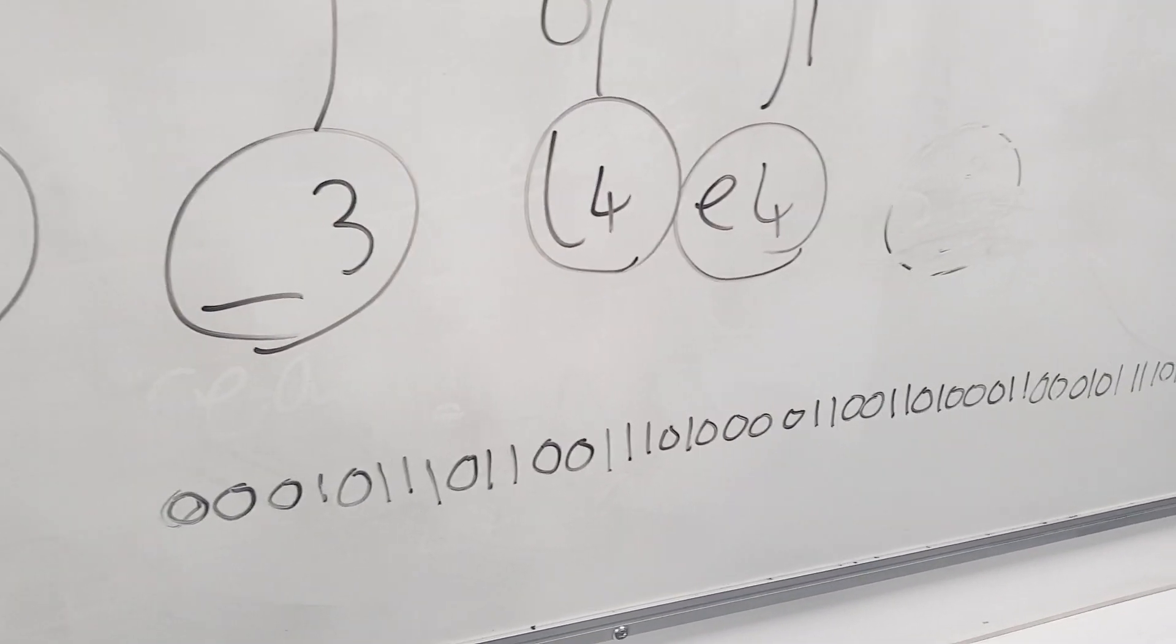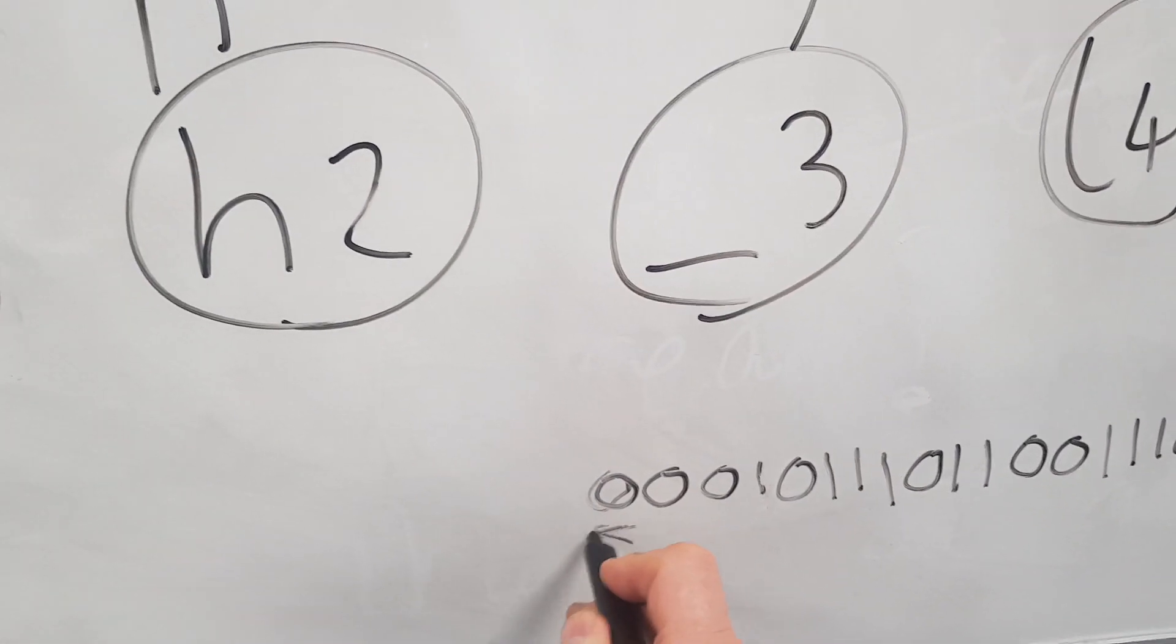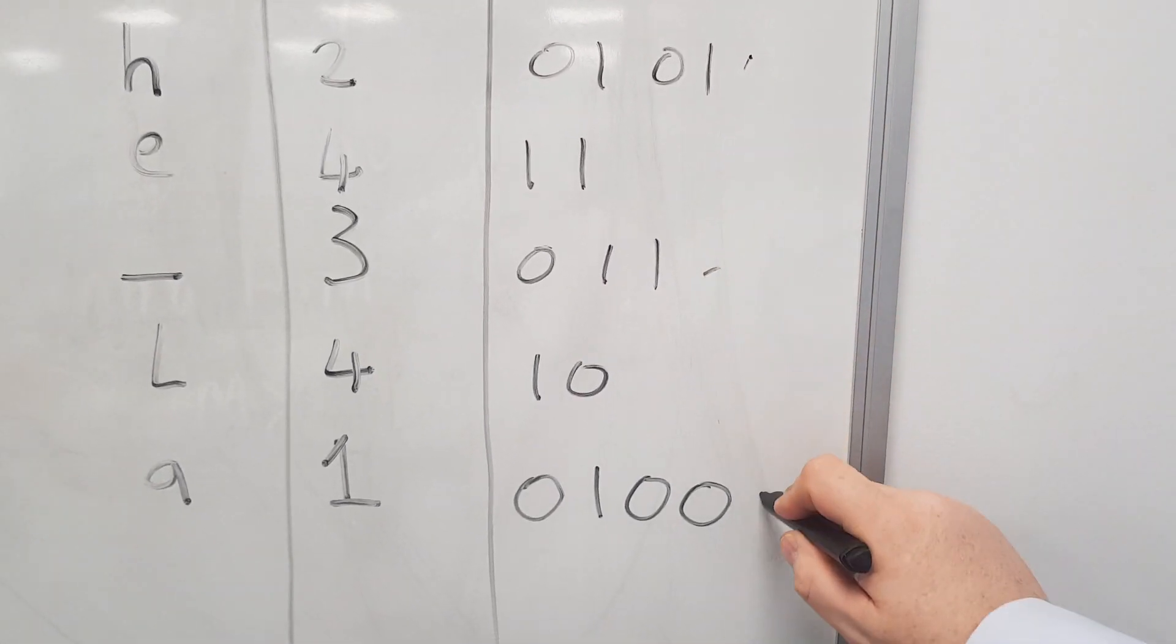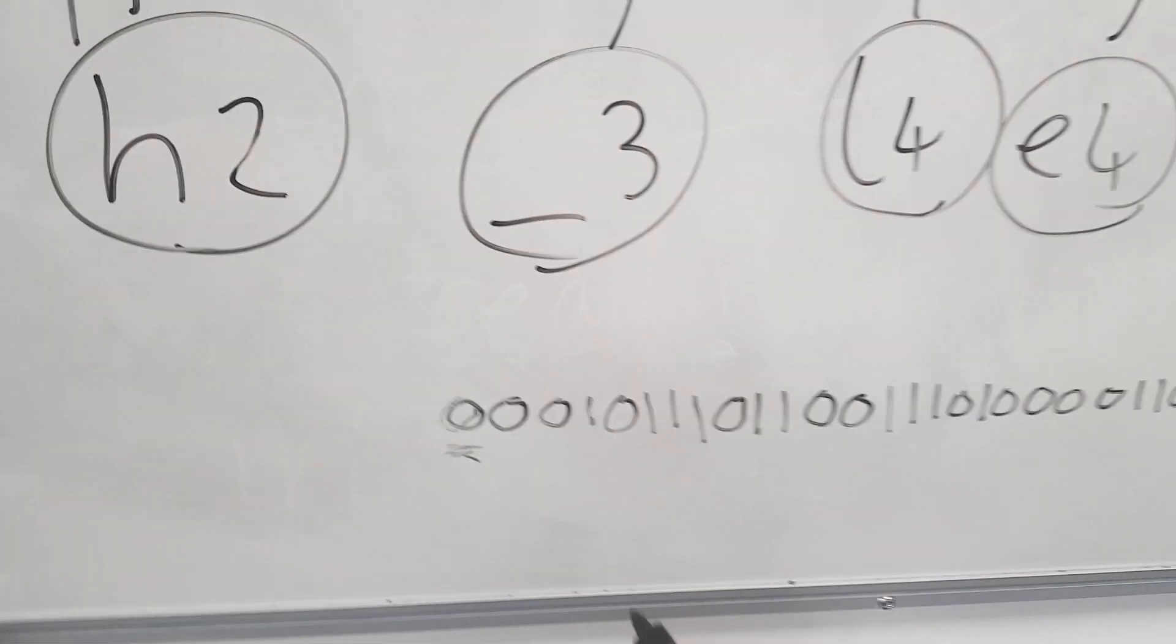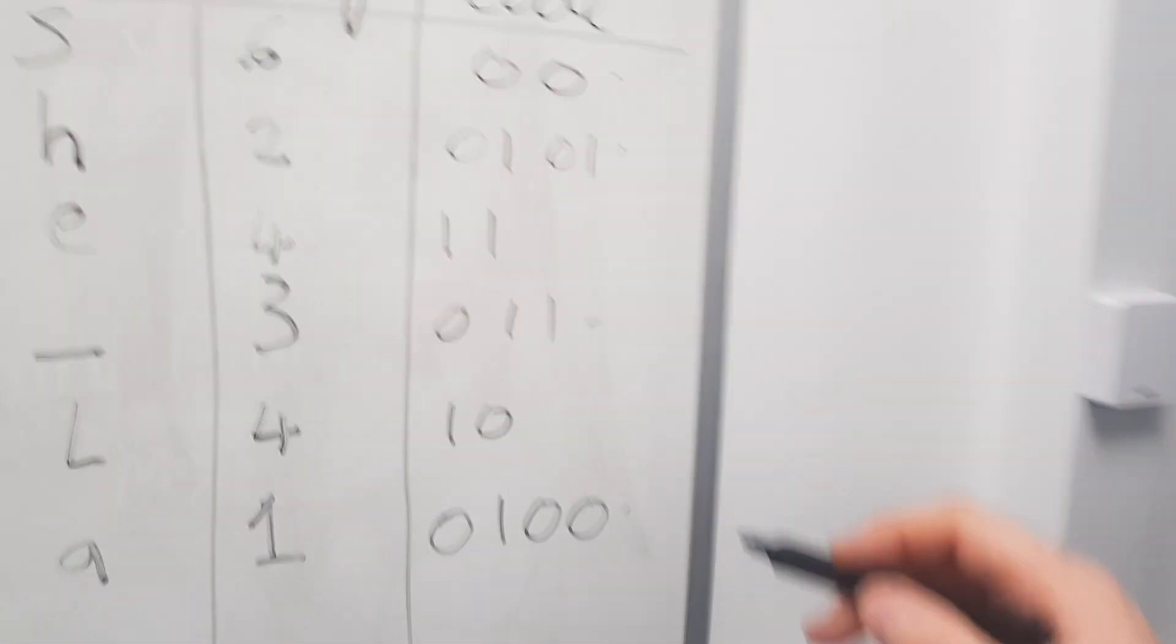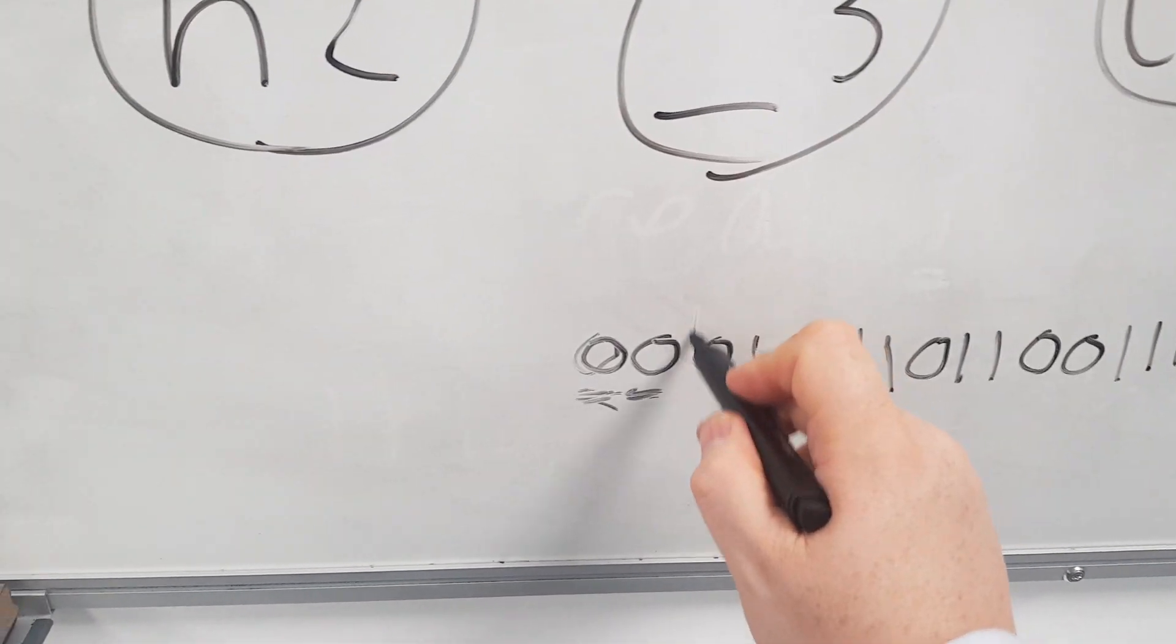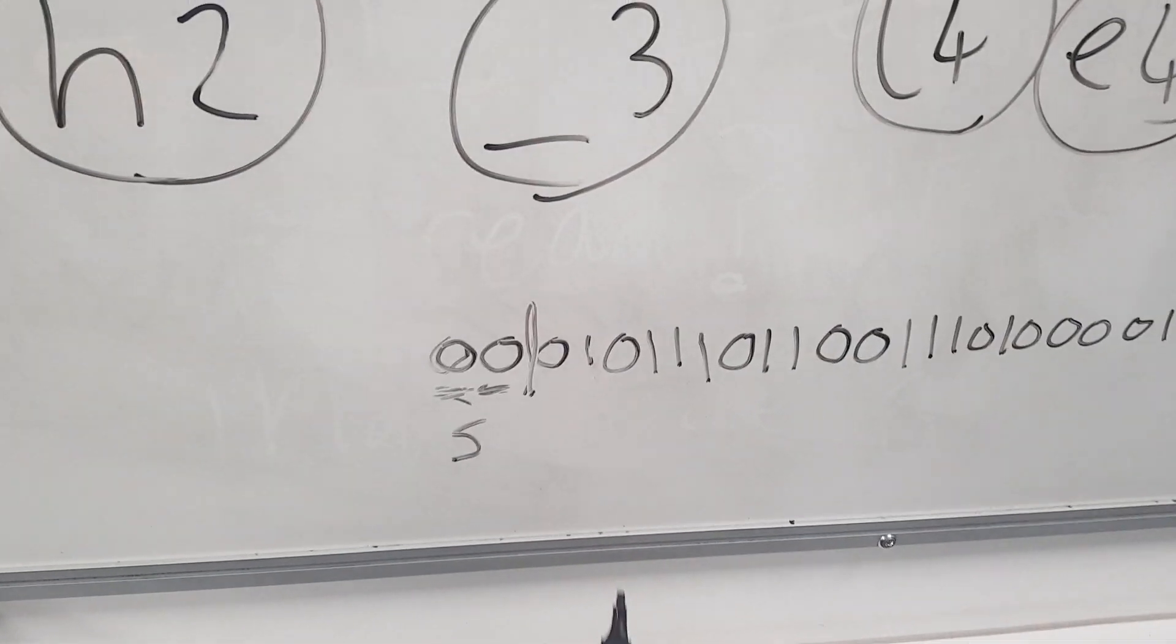So we look at the first binary digit which is zero and we look at our codes and we see that it might be this one, this one, this one or this one, but it definitely can't be either of these two. So what we then do is we go back and we look at the next binary digit which is 00, and we see that the only code that matches is S. So we know then that that must be S.